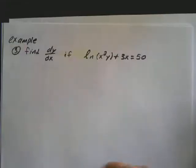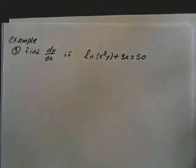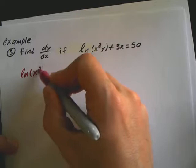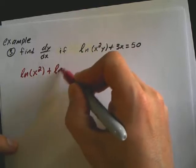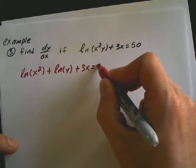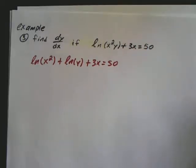That will make it somewhat easier. I'm going to write this as ln of x squared plus ln of y plus the remainder of the problem, which is 3x, equal to 50.